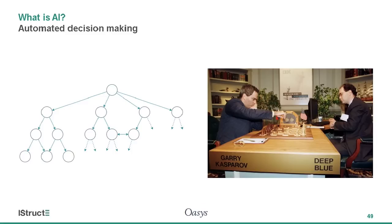AI also aims to encapsulate knowledge and enable automatic decision making. For example, there are expert systems encoding both an expert's knowledge and the way they solve problems. There's also state search, which builds a tree of possible decisions and then navigates it to find the best answer or the most promising route to it.